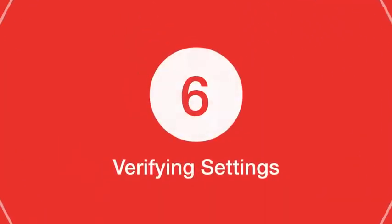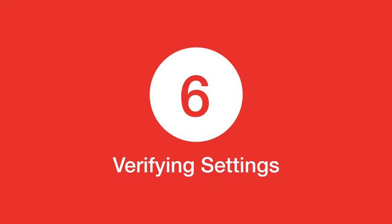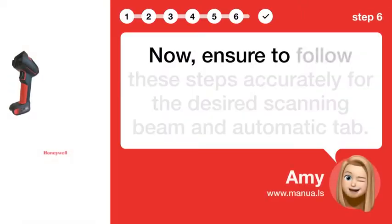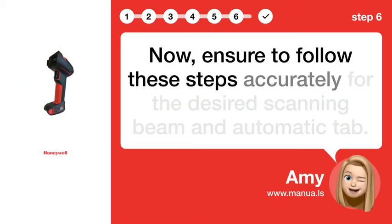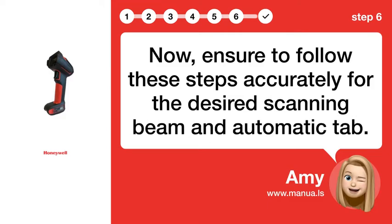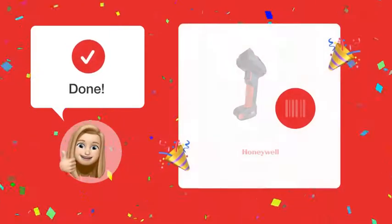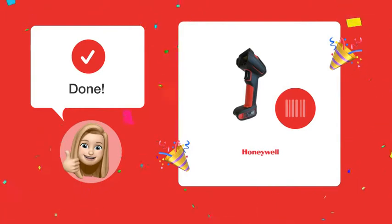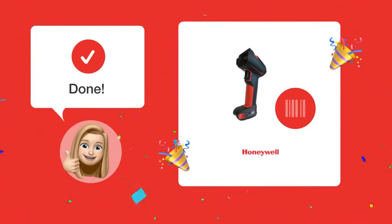Step 6: Verifying Settings. Ensure you follow these steps accurately for the desired scanning beam and automatic tab. By following these steps, you should now have a longer scanning beam and an automatic tab down feature on your Honeywell Granite XB1991i.